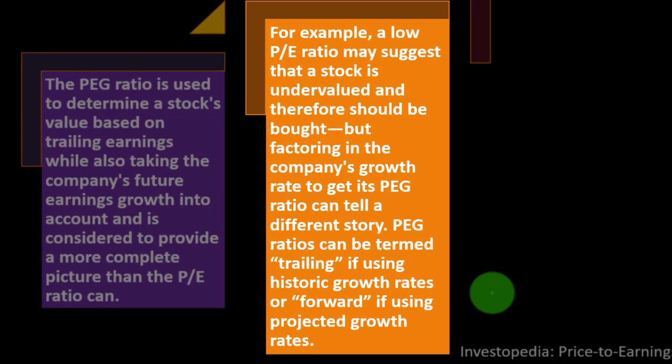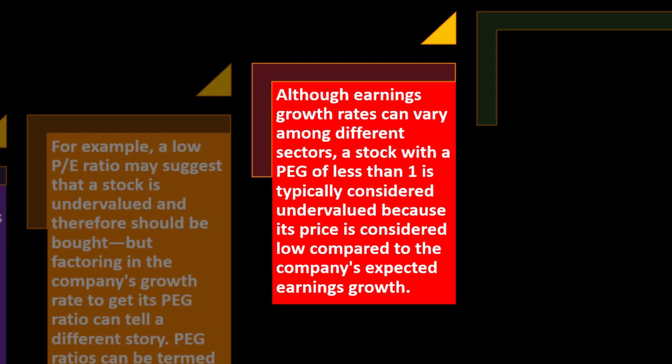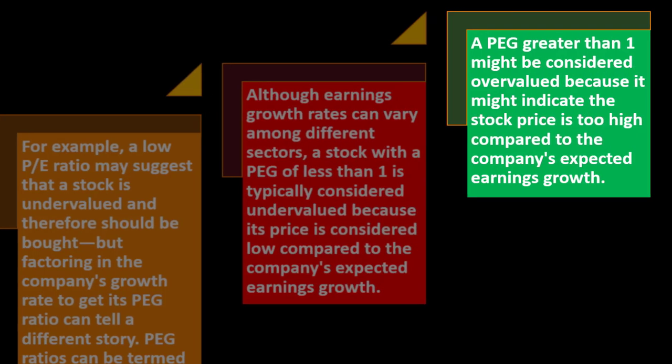The PEG ratio is considered to provide a more complete picture than the P/E ratio alone. For example, a low P/E ratio may suggest a company is undervalued and should be bought, but factoring in the company's growth rate through the PEG can tell a different story. The PEG ratio can be termed trailing if using historic growth rates, or forward if using projected growth rates. A stock with a PEG of less than one is typically considered undervalued; a PEG greater than one might be considered overvalued because the stock price is too high compared to expected earnings growth.